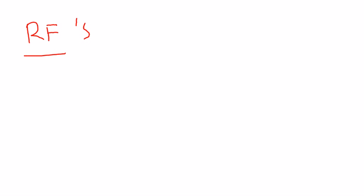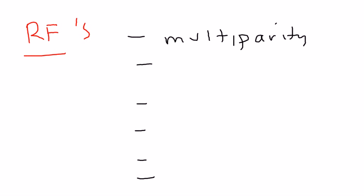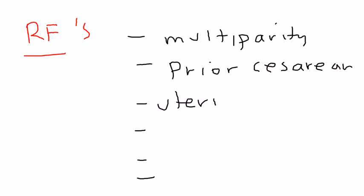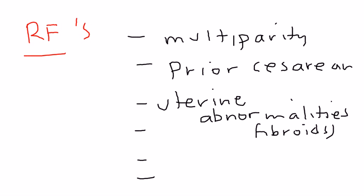Why would a woman develop this? What are some of the risk factors for placenta previa? These risk factors are very important to remember. One of them is multiparity — a woman that's had several pregnancies. A prior cesarean delivery increases her risk of having a placenta previa in a subsequent pregnancy. Uterine abnormalities, such as a uterine fibroid, can also be a risk factor.